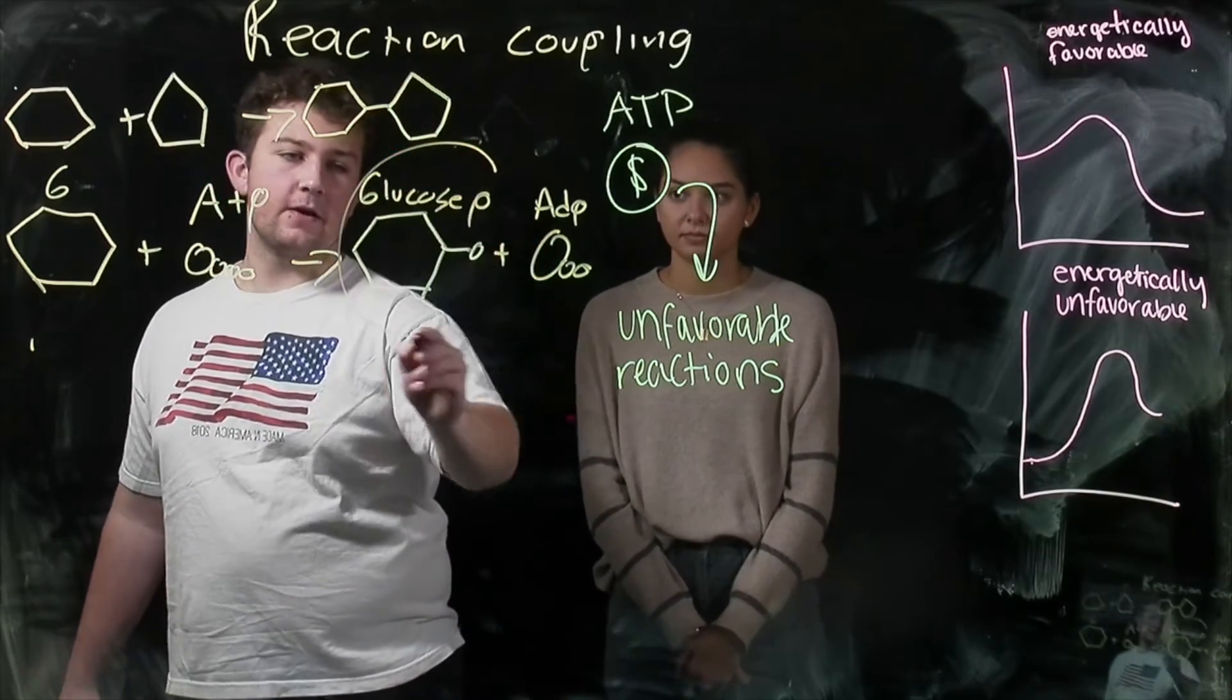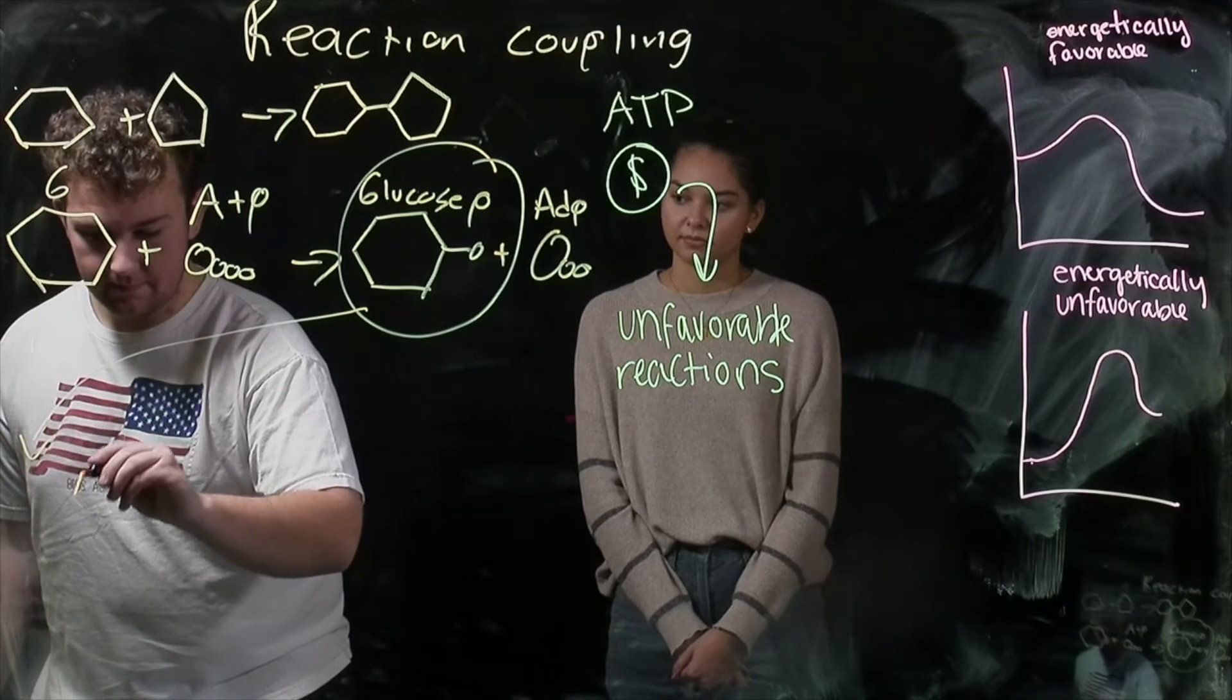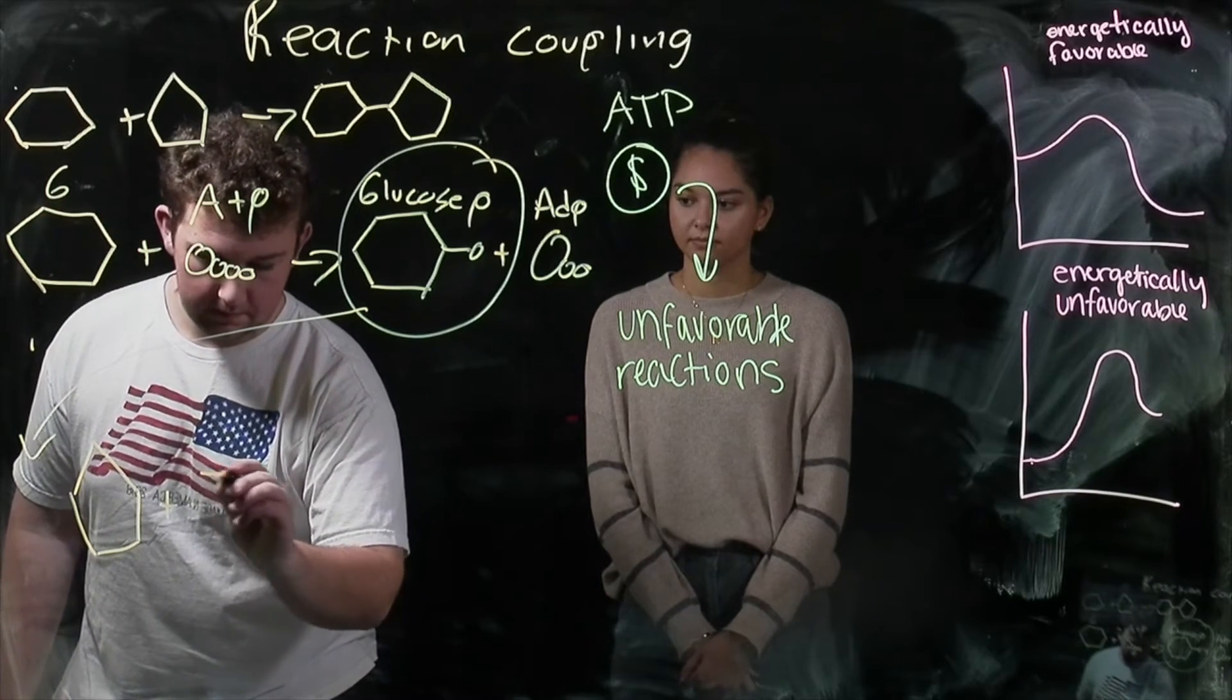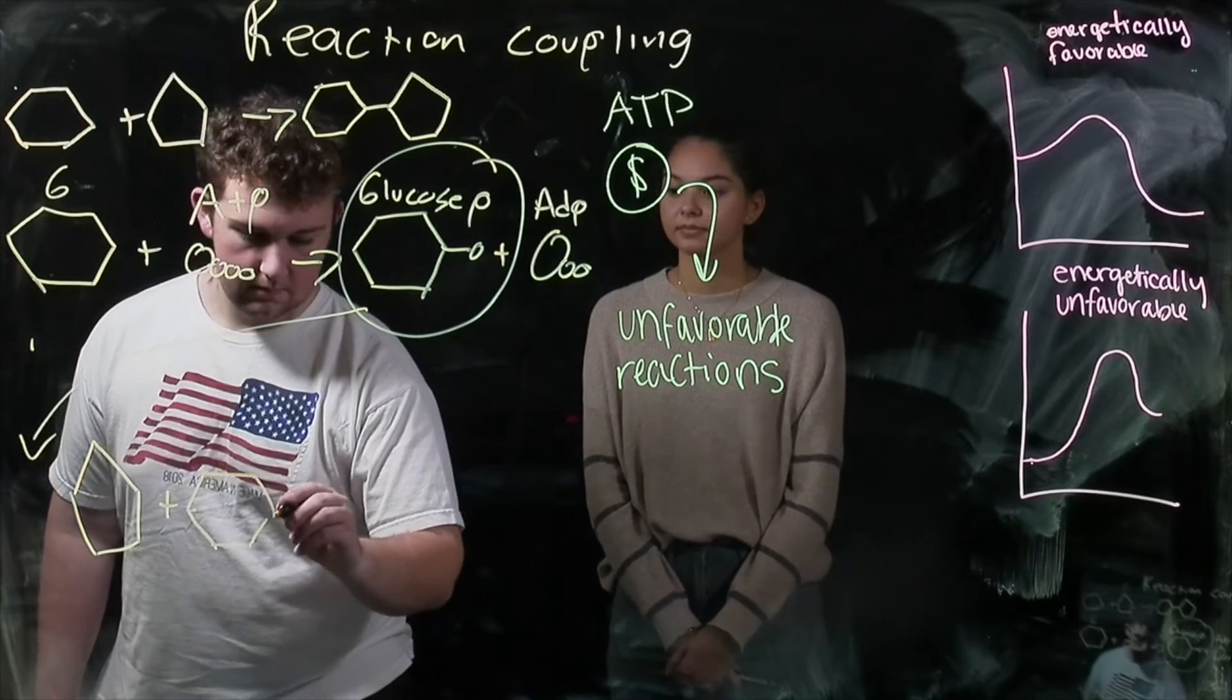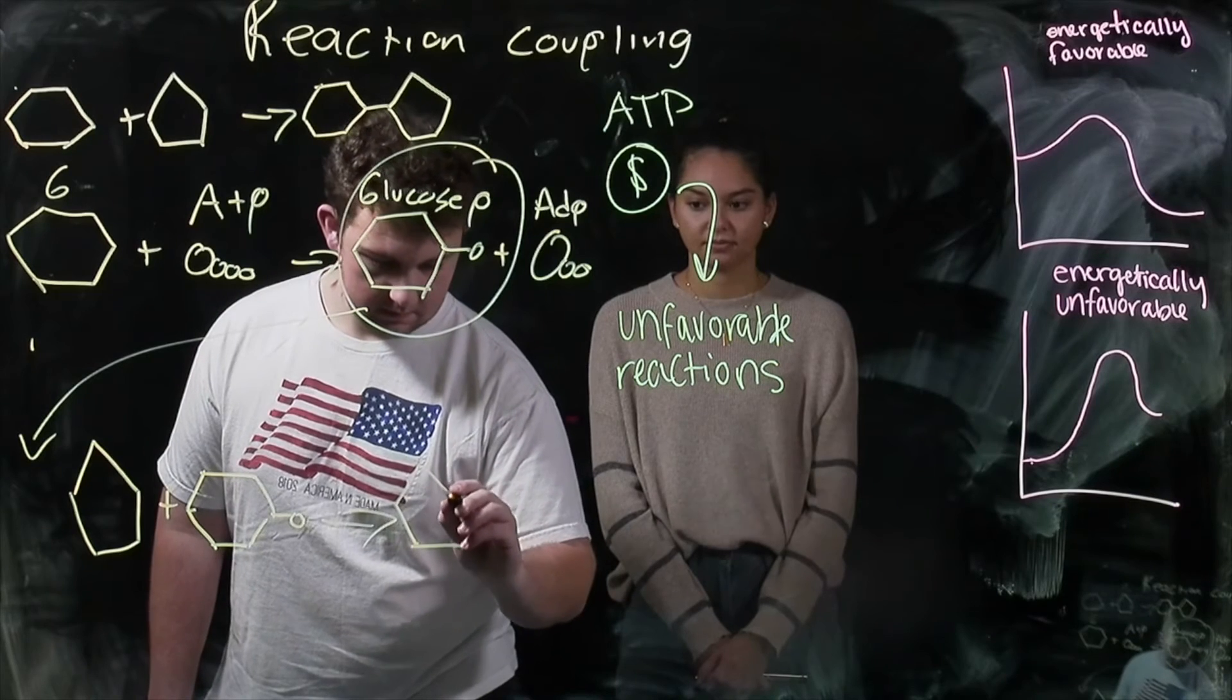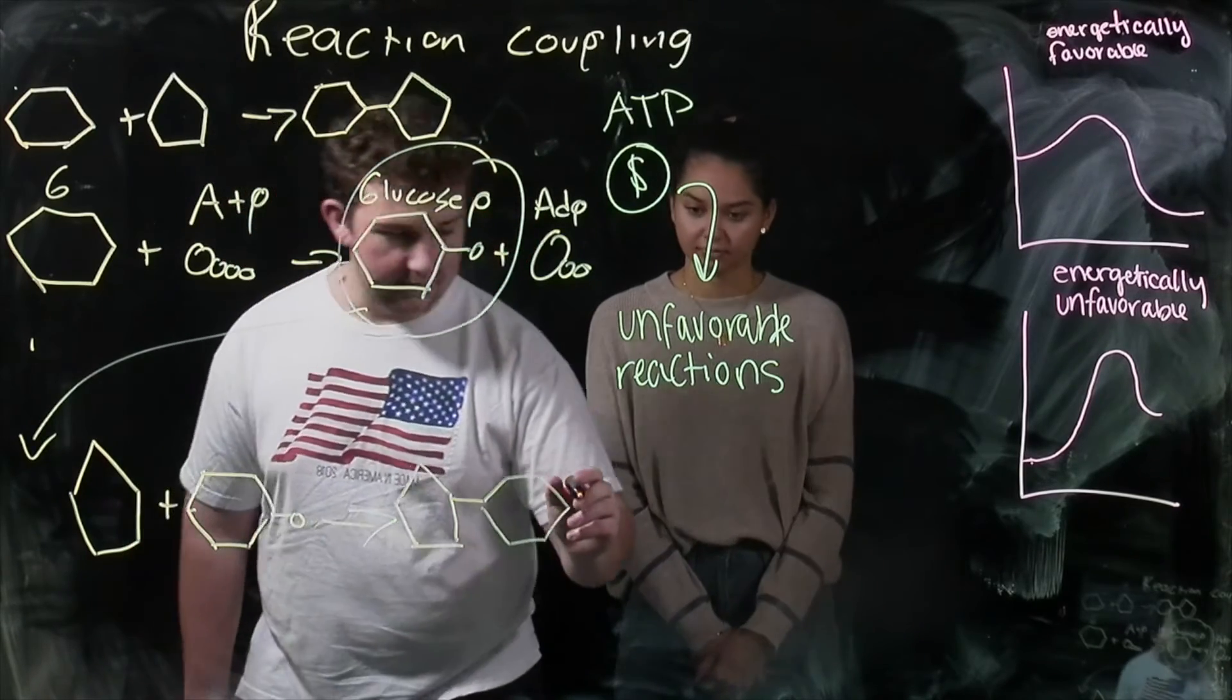Now, you can take this glucose P here that we've created and then react that with fructose on its own to form sucrose, as well as an extra phosphate group.